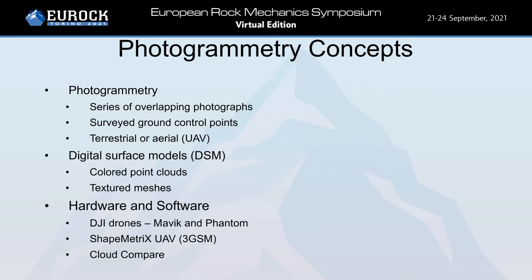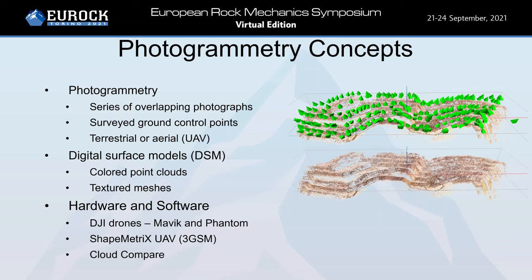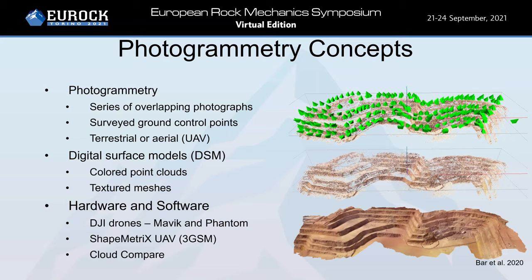Basic concepts of photogrammetry involve capturing a series of overlapping photographs, ideally high resolution and from different angles. This can be done using terrestrial or aerial equipment including UAV, or a combination of both. It also requires surveyed ground control points on the location and orientation of various photographs captured. From the high resolution photographs we can create a digital surface model or DSM, in the form of a colored point cloud or a textured mesh.